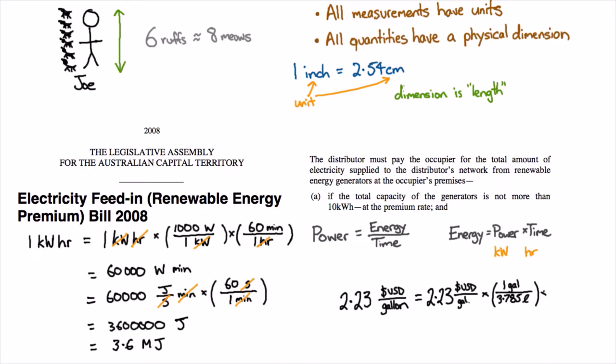And I also want to convert the US dollars to Australian dollars and this time I'm going to want the US dollar on the bottom so it cancels with the US dollar on the top and it turns out that's equal to 1.34 Australian dollars.